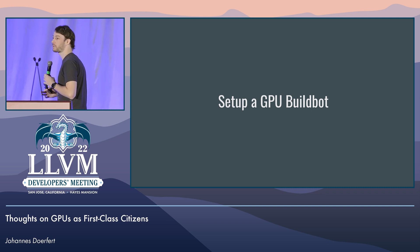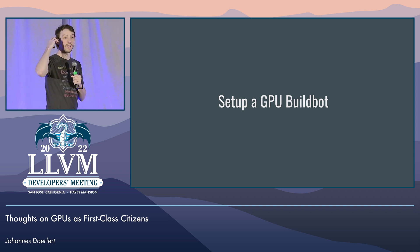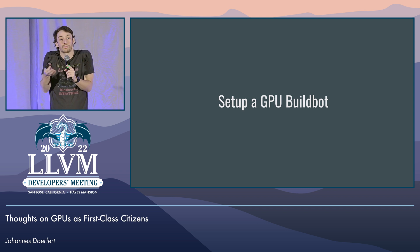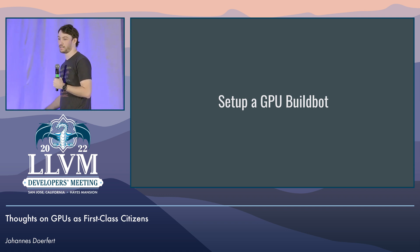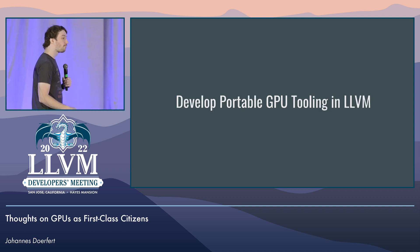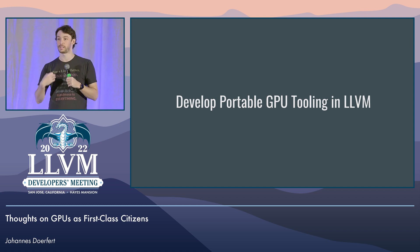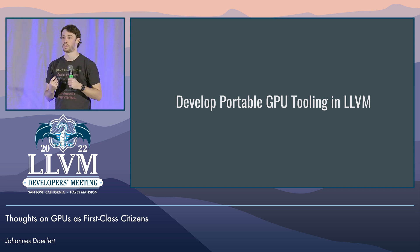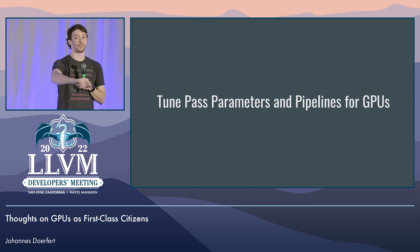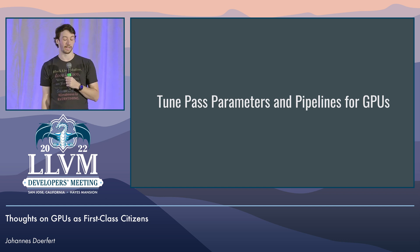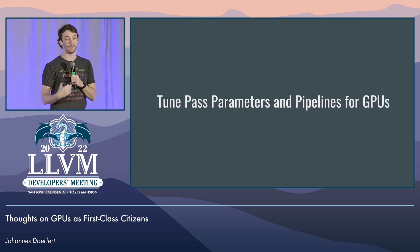Set up GPU build bots. If we already just ran CUDA code on NVIDIA GPUs, that would help ensure we don't accidentally regress and break things. If we run GPU build bots that don't only run this little piece of OpenMP offload regression tests, all three vendors here kind of have to step up on this one. We need portable GPU tooling — most GPU tooling comes from vendors and therefore has various limitations. We as a community tend to build our own tooling: linkers, debuggers. Why don't we build GPU support into these things and provide portable GPU tooling? The pass pipeline and pass parameters are tuned for CPUs, certainly not for GPUs, so if you have ideas on how to tune them for GPUs, that is an open problem.